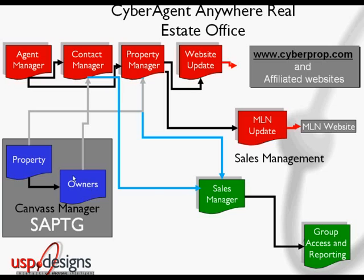With this information, there are various reports available, as well as franchisor reports to access all the sales information of all franchises. The Canvas Manager has property and owner information. This can very easily interact with your existing properties and owners, or you can create a property directly in the Property Manager and an owner directly into the Contact Manager.